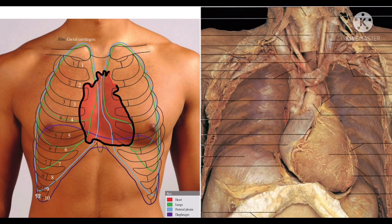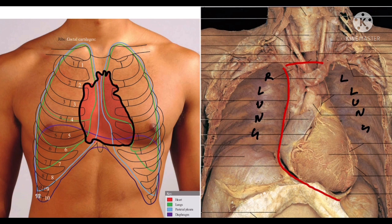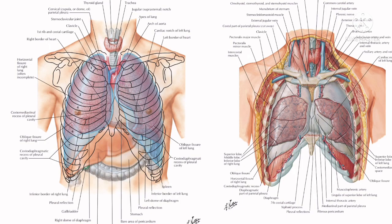This heart is presented behind the thoracic wall in the mediastinum. The mediastinum is the space between the two lungs — here is the right lung and here is the left lung. In between the right and left lung there is a space which is filled with soft tissue and viscera. This space is known as the mediastinum. The heart is placed obliquely behind the sternum and adjoining part of the costal cartilages.